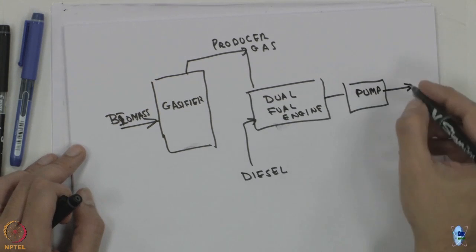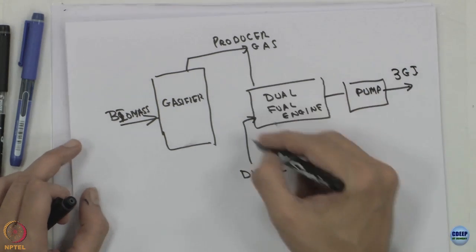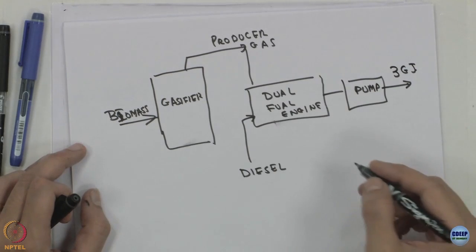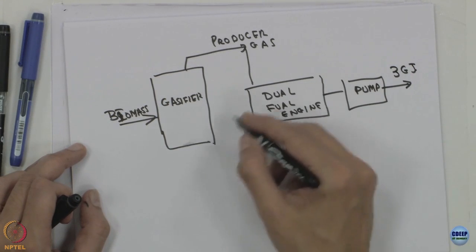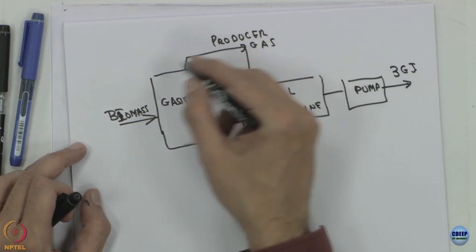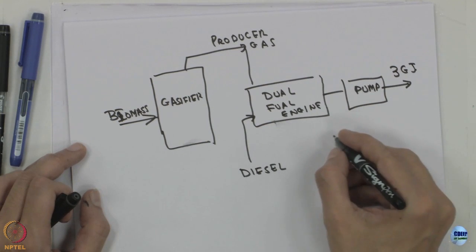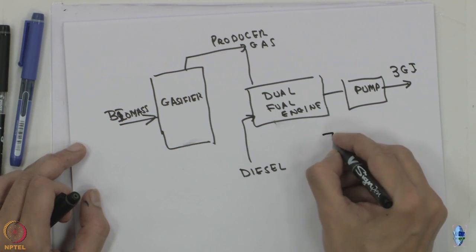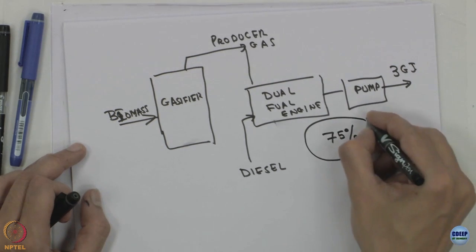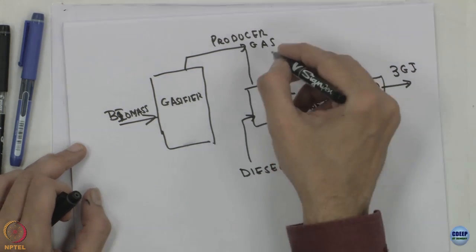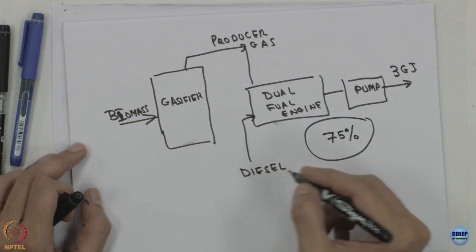The energy output is 3 gigajoules. For this dual fuel engine, there is usually a certain limit on the proportion of producer gas. At most, we are looking at 75 percent of the input provided from the producer gas, and 25 percent coming from diesel.